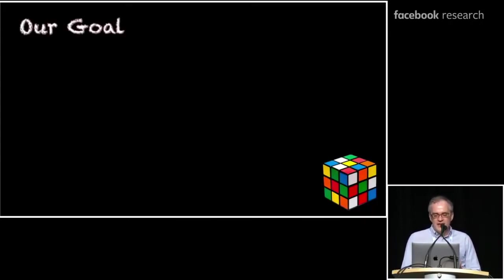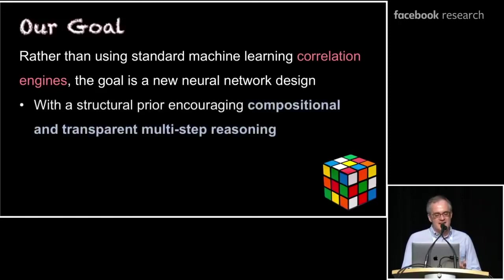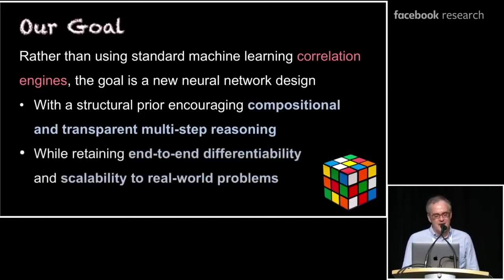Okay, so what is our goal in this work? So, in this work, Drew and my goal is then to say, well, at the moment, the vast majority of machine learning is building these big correlation engines, where you're learning any kind of association between what's in the input data and the results that you want to assign. We'd like to have a different kind of neural network design, where it explicitly has a structural prior that encourages compositional and transparent multi-step reasoning. But on the other hand, we'd like to avoid the issues with something like tree recursive neural networks, and to have a model that maintains end-to-end differentiability and is easily scalable to real-world problems.